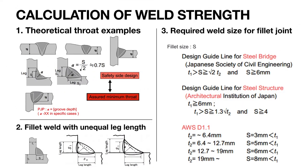For a butt joint, the throat a equals the thickness of the material; if one plate is thinner, a takes the lesser thickness. For a fillet weld, s is the leg and a is the throat, related by: a equals leg divided by root 2, which equals 0.7 times s. Various standards such as AWS (American Welding Society), API (American Petroleum Institute), and Japanese construction institutes provide guidelines for required weld size, specifying thickness and leg size for steel bridges and structures.